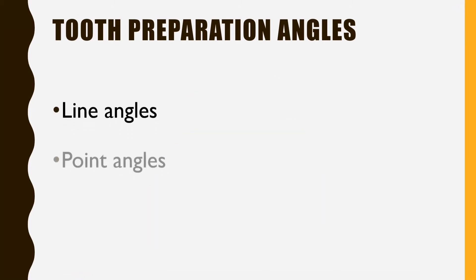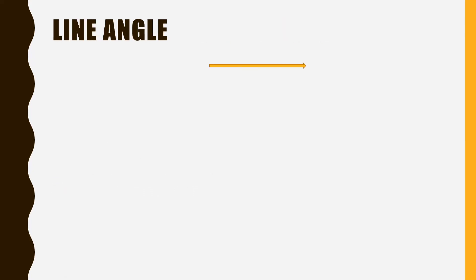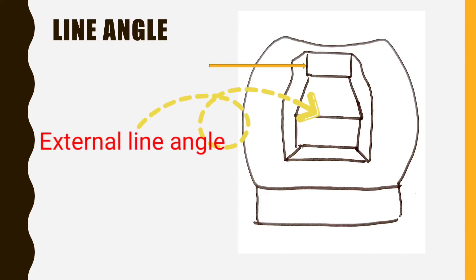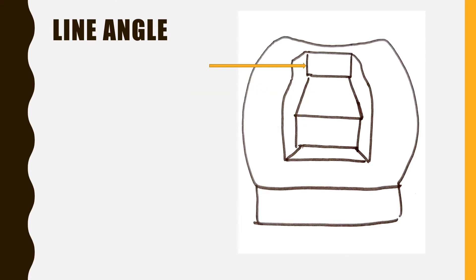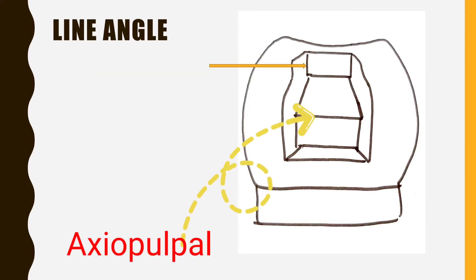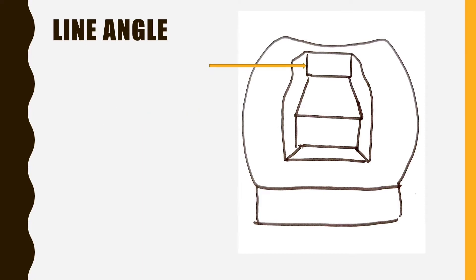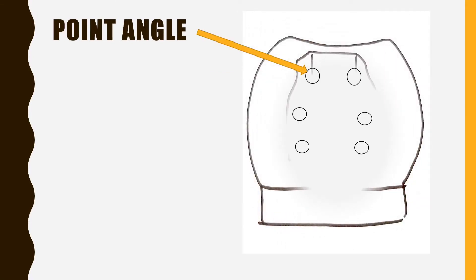Tooth preparation angles include line angle, point angle, and cavo-surface angle. A line angle is made by the junction of two surfaces along a line. There are two types: internal — where the apex of the angle points into the tooth — and external — where it points away. Line angles are named by the surfaces they join, for example disto-facial line angle or axial-pulpal line angle. In a Class 2 preparation there are 11 line angles — this can be an MCQ.